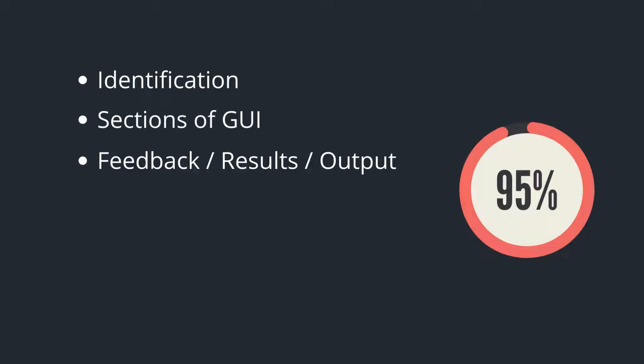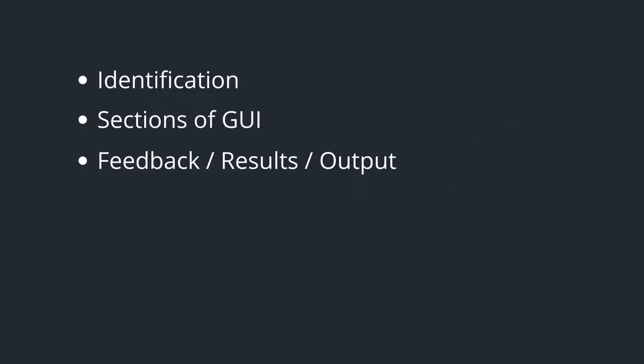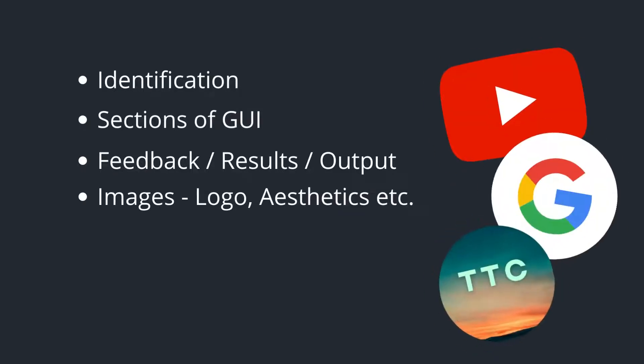The third way you can use a label is for feedback, results, or output. By making your label change its value dynamically, you can make it show a different integer, number, or result depending on what's happening in your GUI application. And last but not least, images and aesthetics — logos. YouTube uses the play button, YouTube being part of Google has its own logo, and obviously your very best, Thinking Through Code.